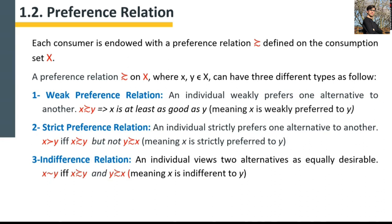For example, when there are two options again — apple and orange — when someone asks which one you would pick, you say, 'I like both apple and orange, but I would rather prefer orange.' It doesn't say strictly — there is no claim that if there's no orange you won't take apple. You say you like both but would rather prefer orange. This is weak preference relation.